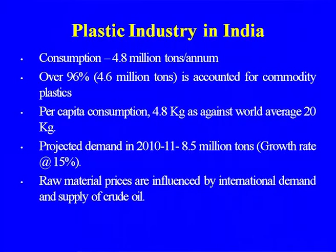Projected demand is around 8.5 million tons in 2011. Raw material prices are influenced by international demand and supply of crude oil, because the basic raw materials used for making polymers — whether ethylene, propylene, xylene, styrene from ethyl benzene, or benzene — are influenced by international crude oil prices. Since we are always interested in export of material, the price must meet international market prices, international quality standards, and that influences raw material prices and the growth of the polymer industry.